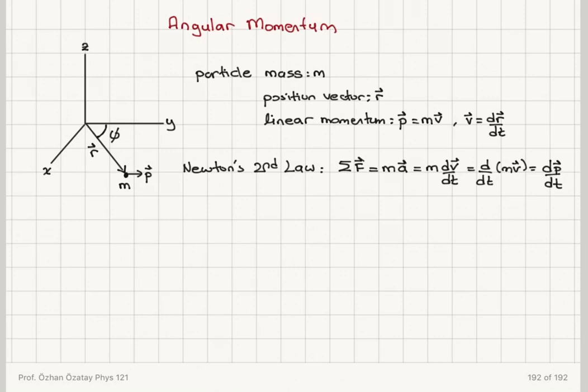Since mass is a constant, this is actually d/dt of mv, which is dp/dt — the rate of change of instantaneous linear momentum. Now we have a new concept: the concept of torque.